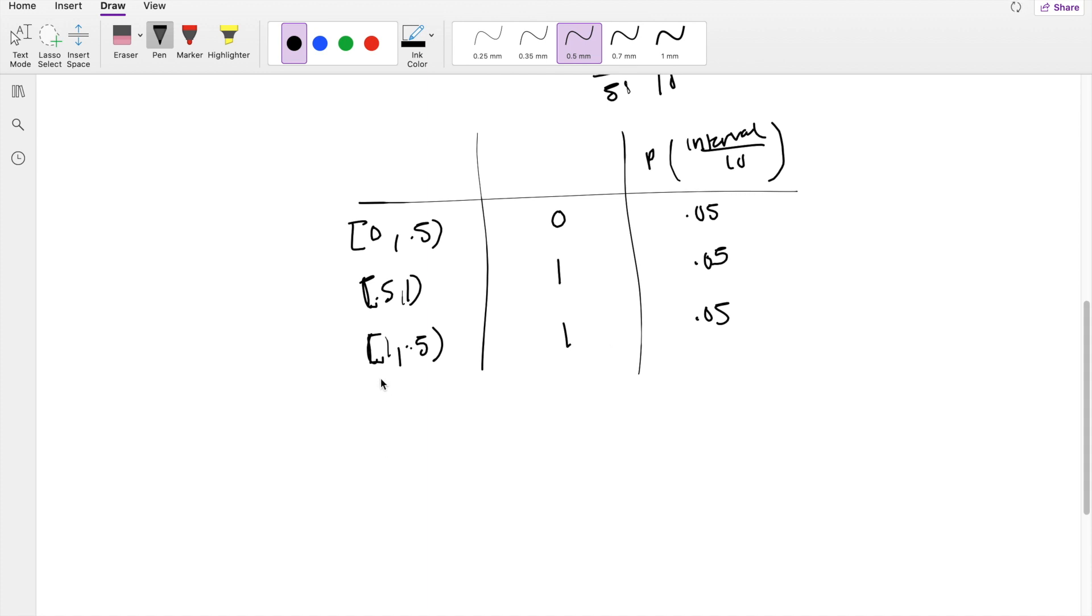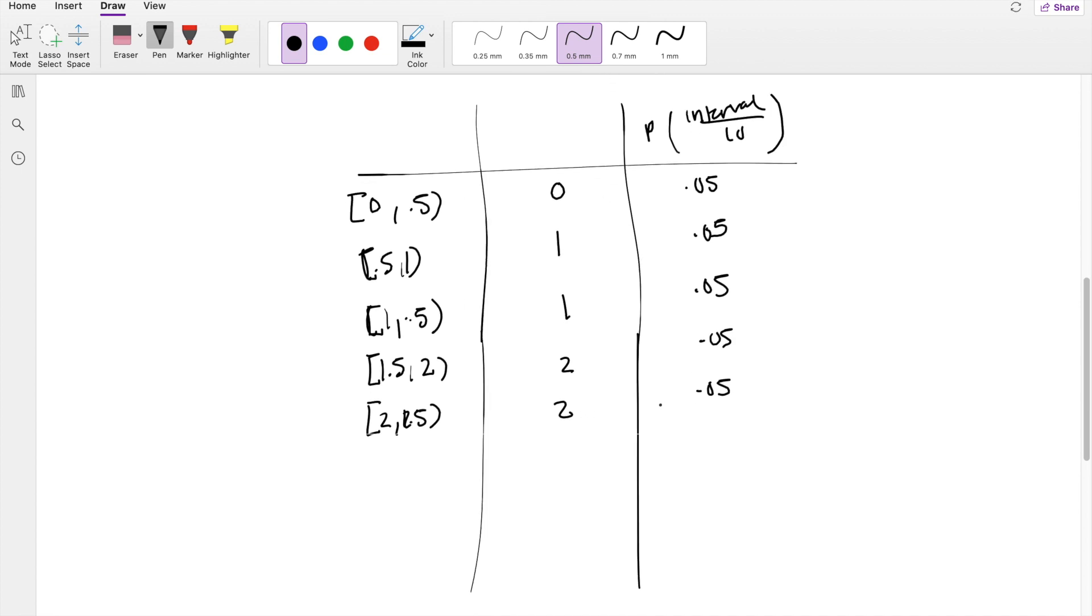I'll do a bit more. From 1.5 to 2, it gets rounded up to 2. From 2.0 to 2.5, it gets rounded down to 2. These all have probability 0.05. You can see the pattern continues.